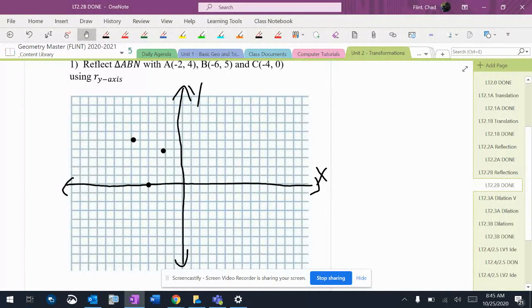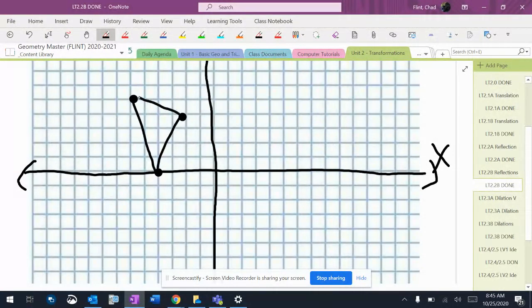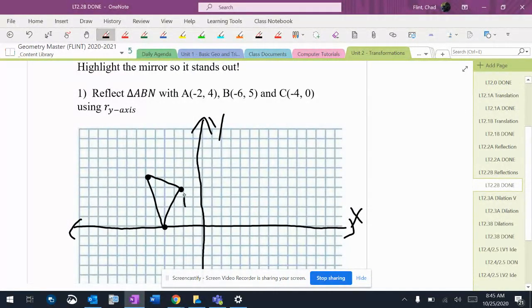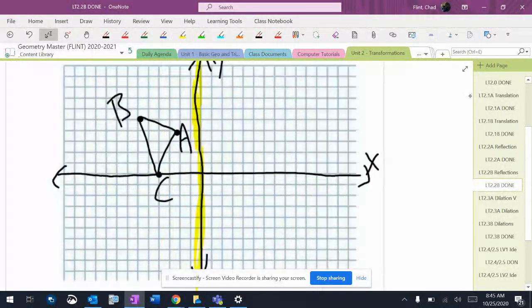So there's my shape. Put my letters on it. And then the axis - I like to highlight it because I highlight everything around. I'm going to use this for the reflection.